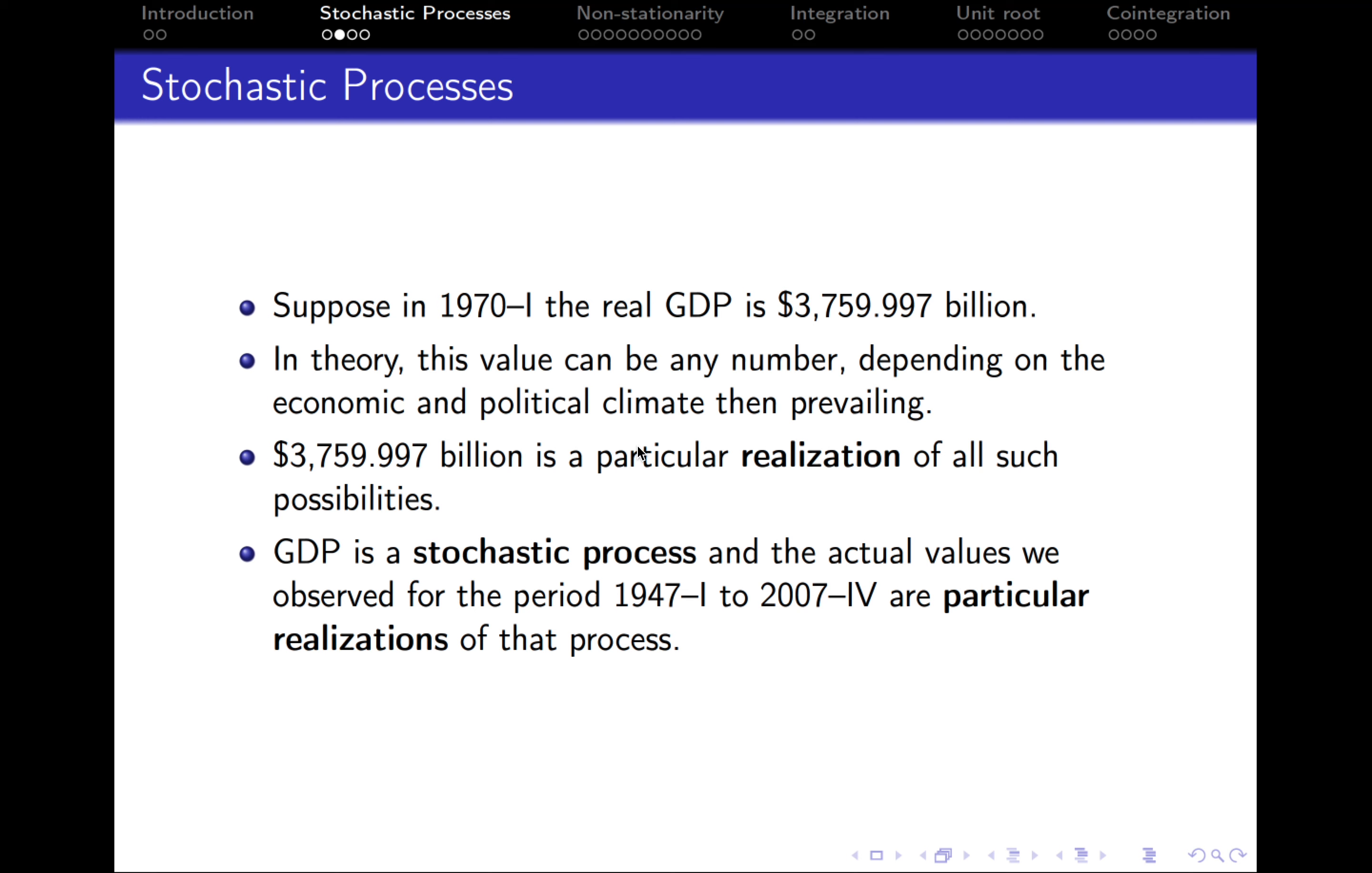Suppose the real GDP in the first quarter of 1970 is $3,759.997 billion. This value is the result of many factors depending on both economic and political climate. If something back then went in another direction, this number would be different—maybe higher, maybe lower. But because of the specific factors that came into force together, we got this number.